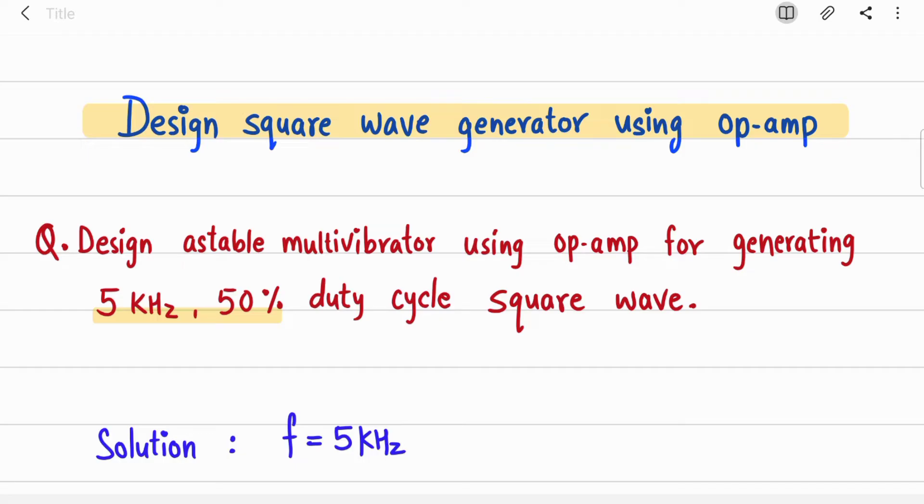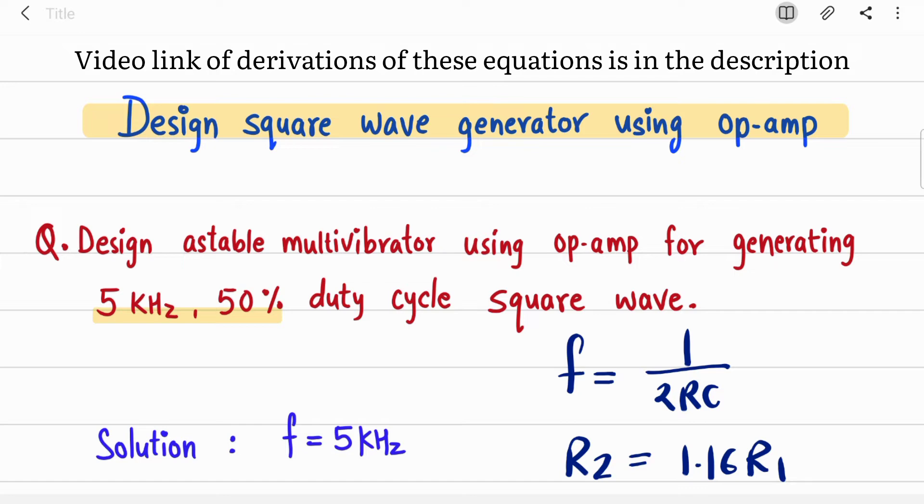For design questions of a stable multivibrator, you must know the frequency of a stable multivibrator, which is f = 1/(2RC), and R2 is nothing but 1.16 times R1. You need to remember these two equations in order to solve such types of questions.